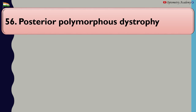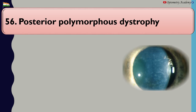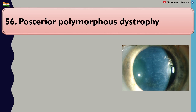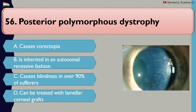Posterior polymorphous dystrophy: A. Causes corectopia, B. Is inherited in an autosomal recessive fashion, C. Causes blindness in over 90% of sufferers, D. Can be treated with lamellar corneal grafts.